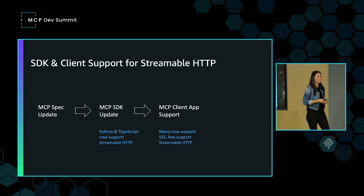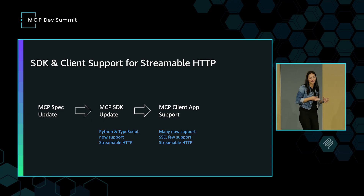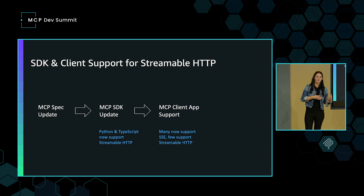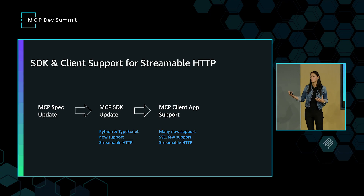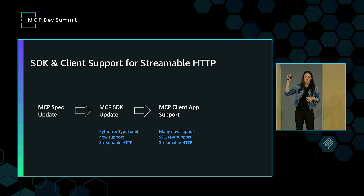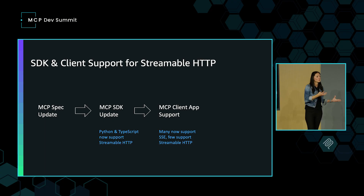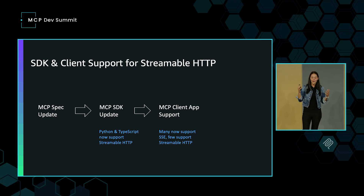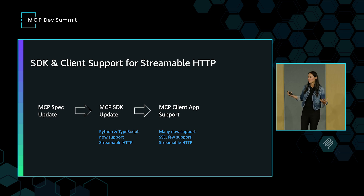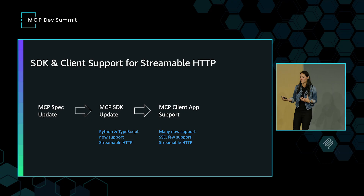One of the challenges we see right now is that we're still early in this. There are some dependencies — once the spec evolves to support it, there is some time needed for the SDKs to catch up. When I put together these slides, it was only the Python and TypeScript SDKs supporting streamable HTTP. Then once you have SDK support, you need the client app support as well, which also follows behind. Many clients support SSE, but streamable HTTP client support is still an opportunity for developers to build out.